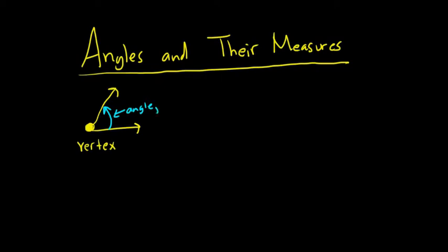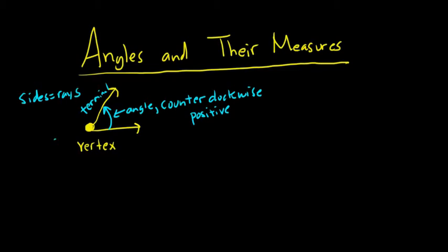And notice the direction of the angle is counter-clockwise. Whenever the direction is counter-clockwise we say it's the positive direction. So it's a positive angle. This side here is called the terminal side. And the sides themselves are called rays. And this endpoint here that's called the vertex.